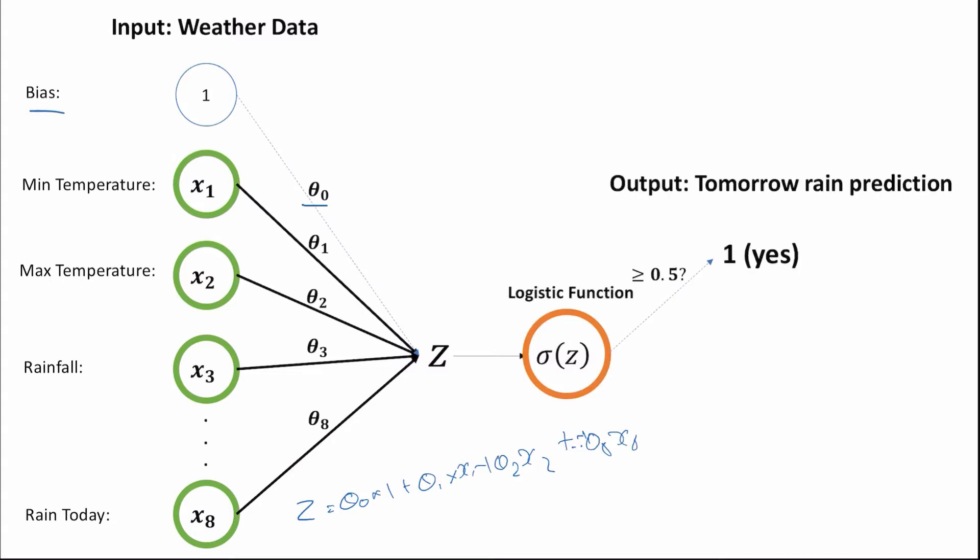We then implement our boundary condition: is this value greater than or equal to 0.5? If so, predict yes, it will rain tomorrow; if not, no. The logistic function is essentially what separates logistic regression from linear regression — it's the addition of this extra step.